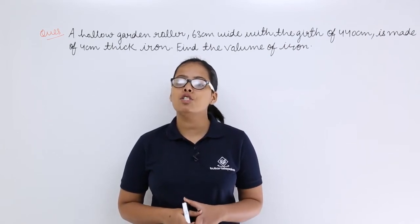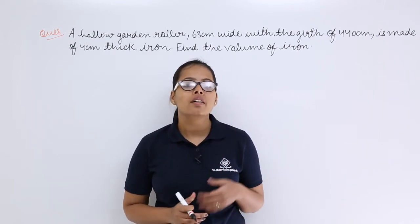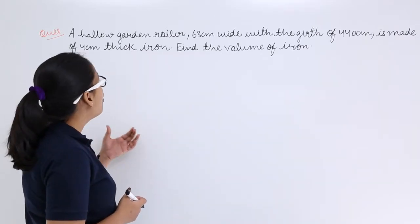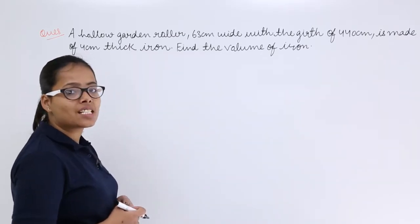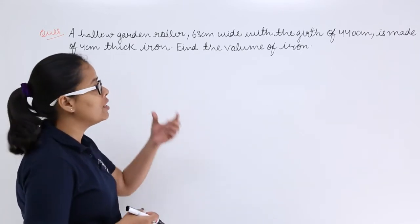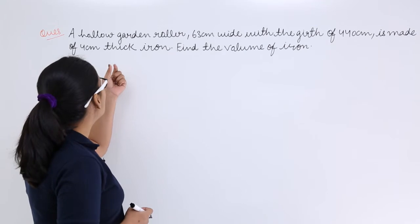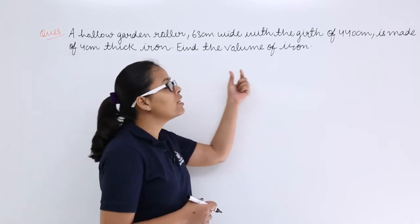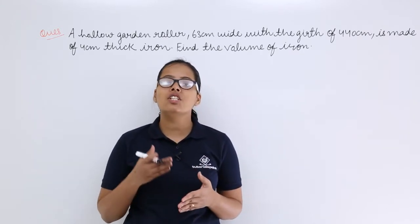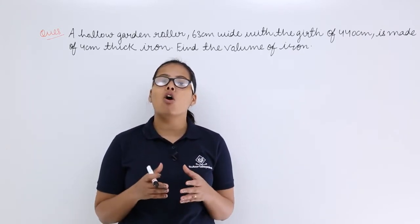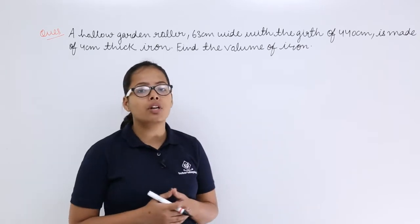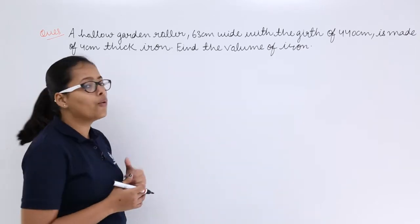Let's discuss this problem on volume of a cylinder. A hollow garden roller which is 63 centimeter wide with a girth of 440 centimeter is made of 4 centimeter thick iron. Find the volume of iron. Since this roller is in the shape of a hollow cylinder, it will have some thickness, and that thickness has been given as 4 centimeter.